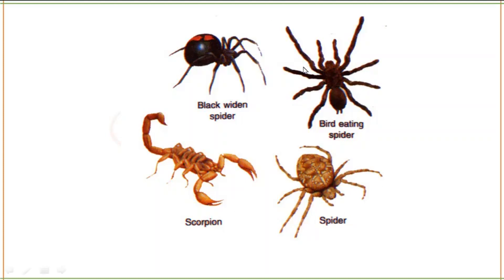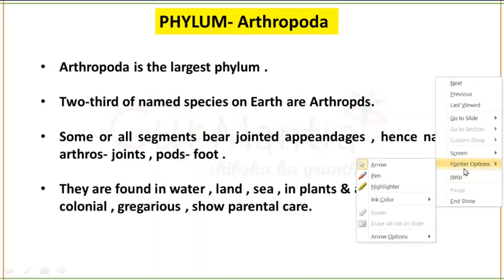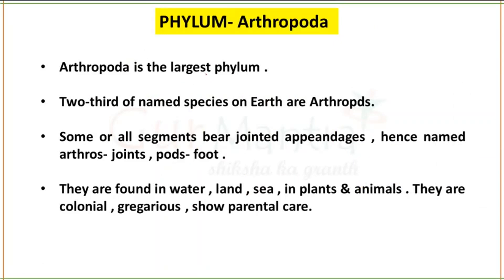As you can see on the screen, in the Arthropoda group we are going to see a variety of organisms — spiders, scorpions, prawns, butterflies, etc. Arthropoda is the largest phylum. In non-chordata, about 2/3rd of all known species belong to this group, which is quite a large ratio.